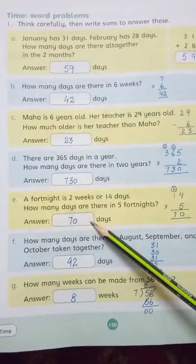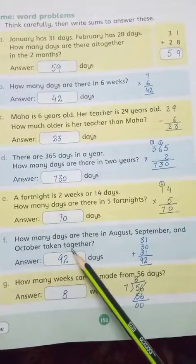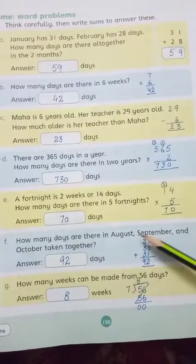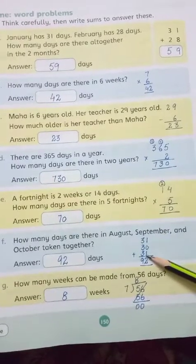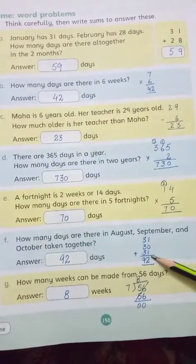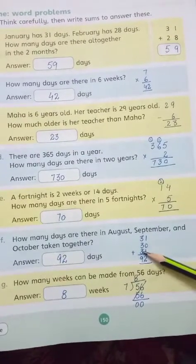Problem F: How many days are there in August, September, and October taken together? August has 31 days, September has 30, and October has 31. When we add them: one add one is two, three add three is six, six add three is nine. Answer: 92 days.